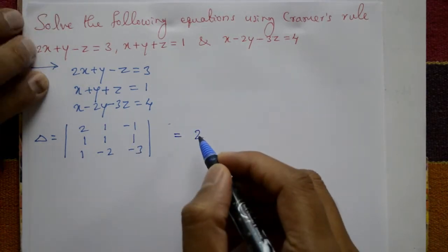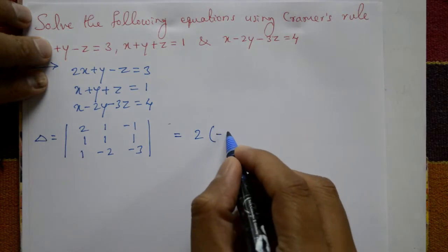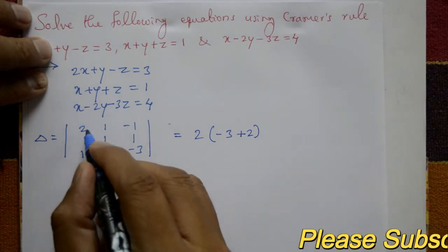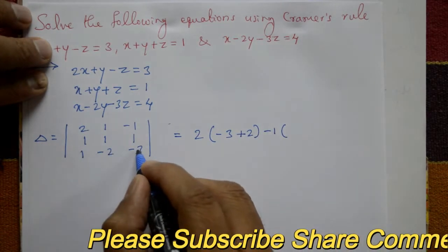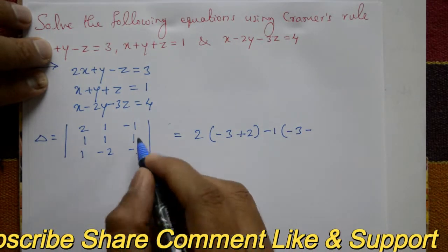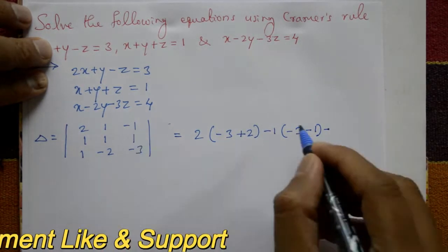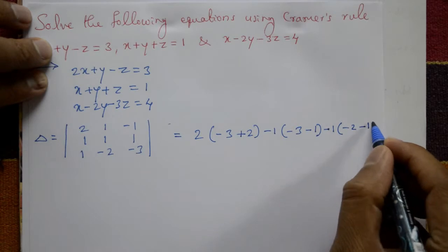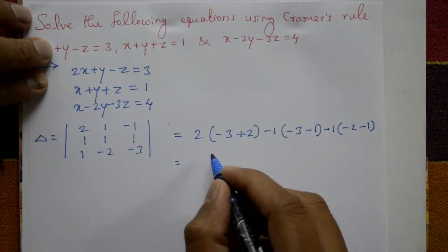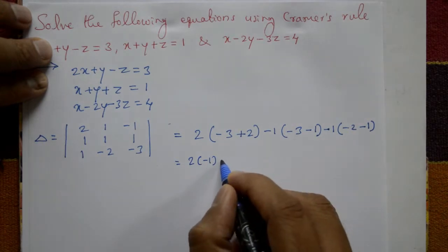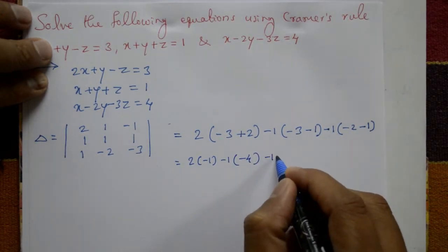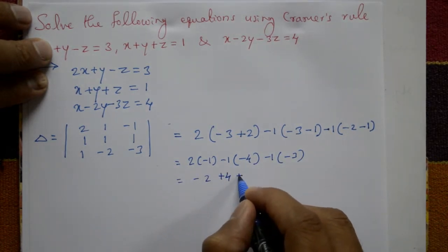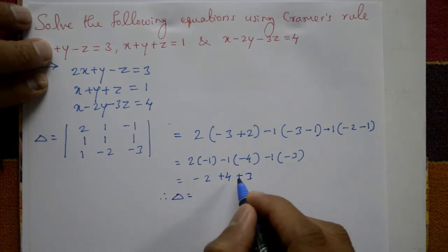Expanding: 2 into ((-3) - (-2)) = 2 into (-1) = -2 plus 2. Minus 1 into (1 into 3 - (-3)) with sign. Minus 1 element: -1 into (1 into (-2) minus 1 into 1). This gives 2(-1) - 1(-4) - 1(-3), which simplifies to -2 + 4 + 3. Therefore Delta is equal to 5.